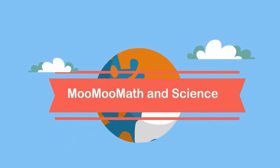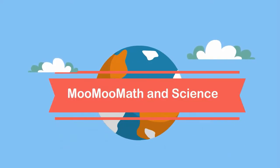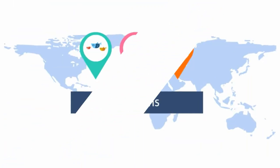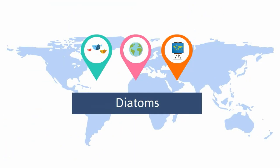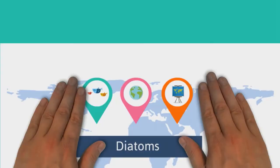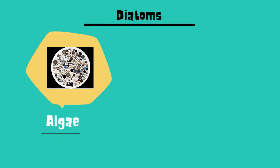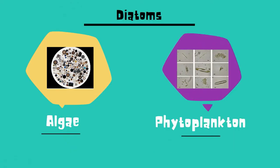Welcome to Moo Moo Math and Science. In this video I'd like to talk about diatoms. Diatoms are a major group of algae and are among the most common types of phytoplankton.